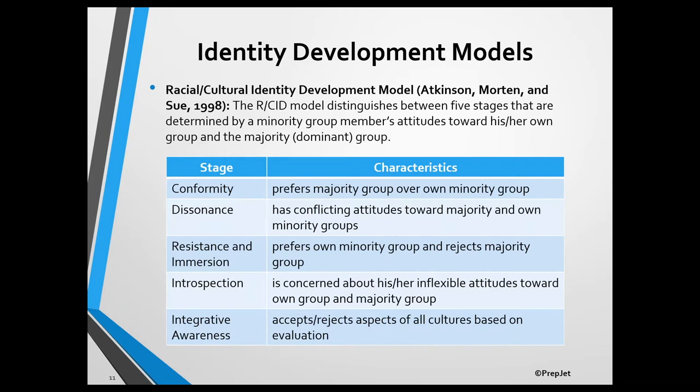These individuals prefer a therapist from the majority group and view a therapist's attempts to help them explore their cultural identity as threatening. As the result of exposure to race-related information or events, people in the dissonance stage question their attitudes toward members of their own minority group and the majority group. They're aware of the effects of racism and are interested in learning about their own culture. They may prefer a therapist from the majority group but want the therapist to be familiar with their culture, and they're interested in exploring their cultural identity.